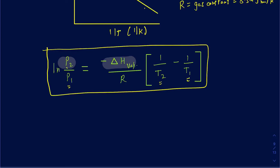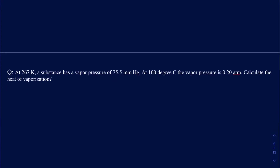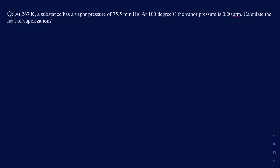Once you know your knowns and your unknown, it's all about doing the math. For example, at 267 Kelvin, a substance has a vapor pressure of 75.5 mm of mercury. You want to make sure you relate the right temperature with the right pressure. So this 267 Kelvin is going to be T1, and P1 is going to be 75.5 mm of mercury.